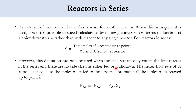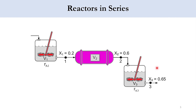Accordingly, we write FAi = FA0 - FA0·Xi. For the first reactor: FA1 = FA0 - FA0·X1. For the second reactor: FA2 = FA0 - FA0·X2. Now let's move to an example to see how this works.